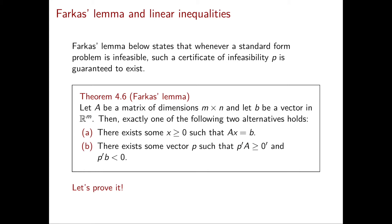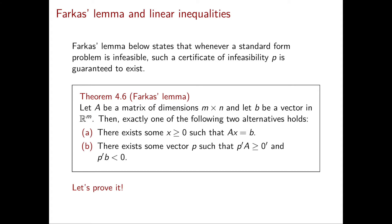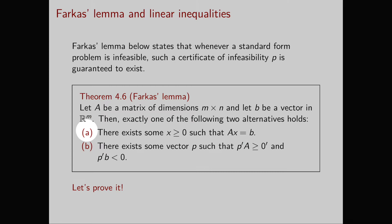So now let's read the statement of Farkas Lemma. Let A be a matrix of dimensions m times n and let b be a vector in R^m. Then exactly one of the following two alternatives holds. Alternative A: there exists some x greater than or equal to 0 such that Ax equal to b. Alternative B: there exists some vector p such that p-transpose A greater than or equal to 0-transpose and p-transpose b strictly negative. In particular, in case A our system is feasible, while in case B our system is infeasible.